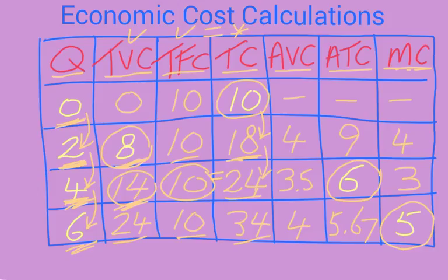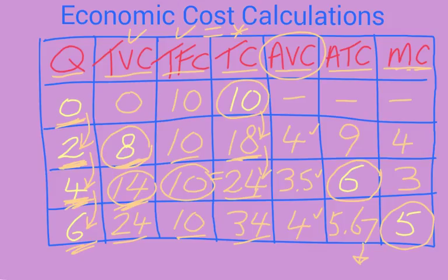The text also graphs these relationships. Average variable cost goes from 4 to 3.50 to 4 — it falls first and then rises. Average total cost similarly falls and then rises after 6 products. Both follow a U-shaped curve. Marginal cost also falls first (from 4 to 3) and then increases, forming a steeper U-shaped curve. Those graphs are available in this section if you want to check them out.